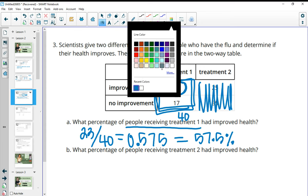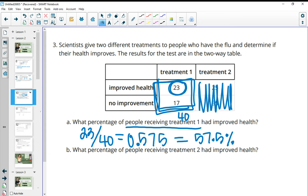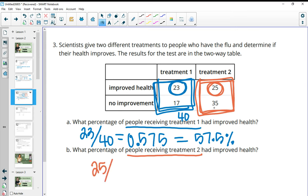So now we'll do a similar idea, but this time we're going to be doing it for the treatment two people. So now we're going to be looking in treatment two. So people receiving treatment two. So out of these people, how many of them had improved health? So that's 25. And then that total, so 25 people out of those had improved health and 25 plus 35 is 60. So there's 60 total people there. Divide those. So 25 divided by 60 gives us 0.416 repeating. Move the decimal place over and we'll get 41.6, which will round to seven. So 41.7 percent of those people receiving treatment two had improved health.